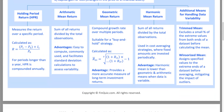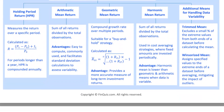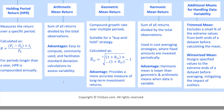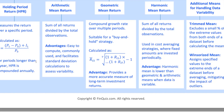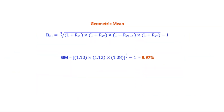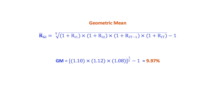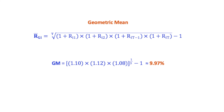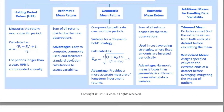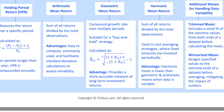Now, the geometric mean return measures the compound annual growth rate of your investment. The formula is: geometric mean return equals the product of (1 plus the return in each period), raised to the power of 1 divided by the number of periods, minus 1. If you had returns of 10%, 12%, and 8% over three years, the geometric mean return would be approximately 9.97%. The geometric mean is usually lower than the arithmetic mean because it factors in the effects of compounding.